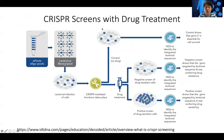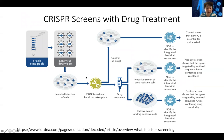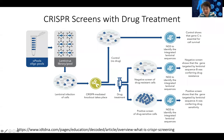CRISPR screens can also be used with drug treatment. You use a CRISPR library where each virus contains a different guide RNA to knock out a different gene, and infect cells with this pooled CRISPR library so each cell takes up one guide RNA. You can then run a control experiment at day zero and also grow cells under drug treatment to see which cells are negatively selected.